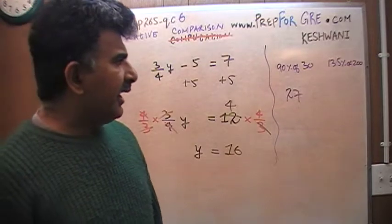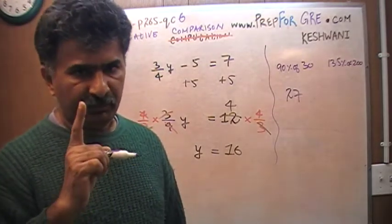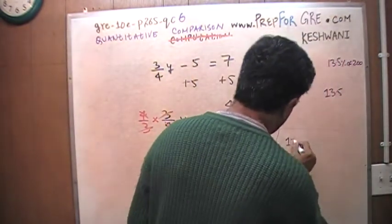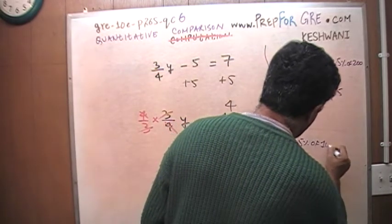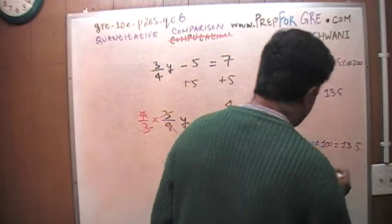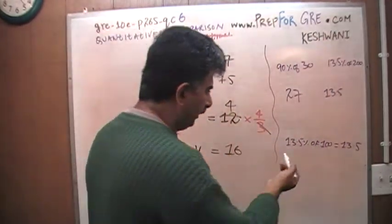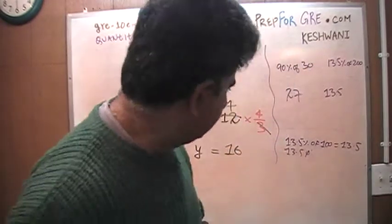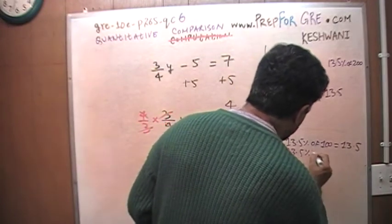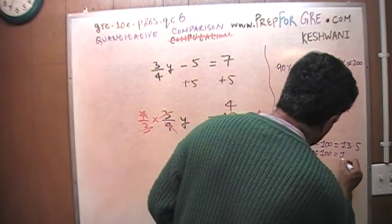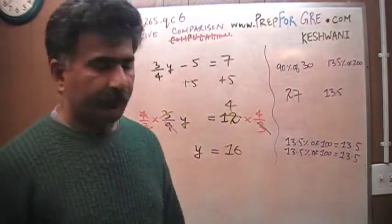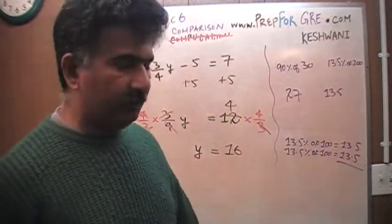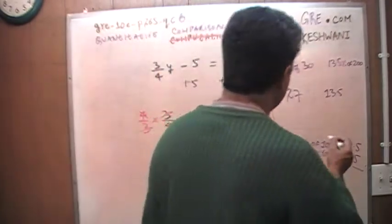How do I find out 13.5% of 200? Well, I know that 13.5% of 100 is of course just 13.5. So another 100, 13.5% of 100 is of course just 13.5. Just add them up. 13 plus 13 is 26. So 13.5 and 13.5 should be 27. Oh, they are equal.